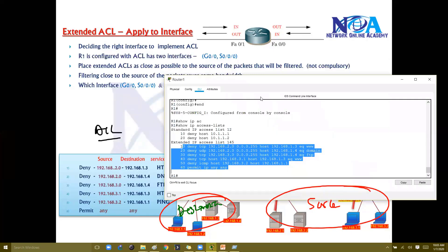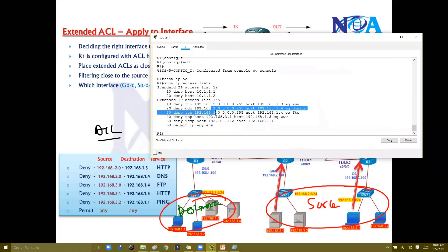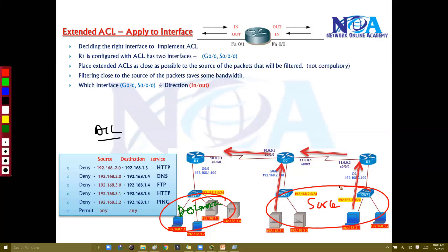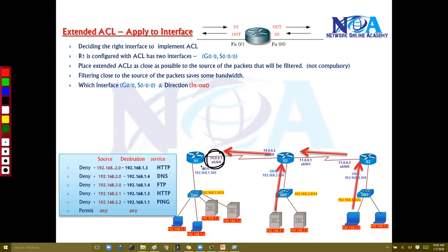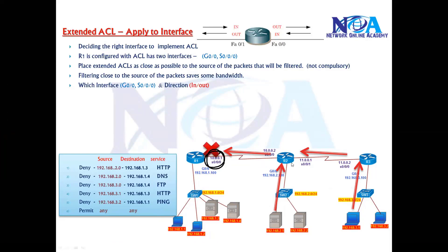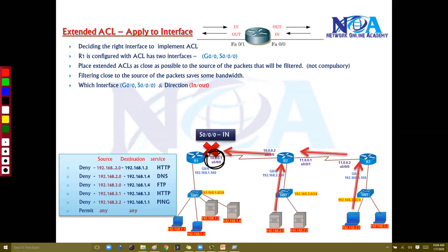The first entry in an ACL statement is the source and the second is the destination. In our rules, the 2.network and 3.network are the sources and 1.network is the destination, so traffic flows from those networks toward Router 1. If we apply the ACL on interface S0/0/0, the direction will be inbound, because the traffic is coming toward that interface. Anything coming toward a router interface is 'in' and anything leaving is 'out'.